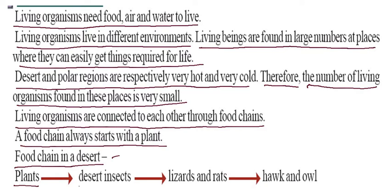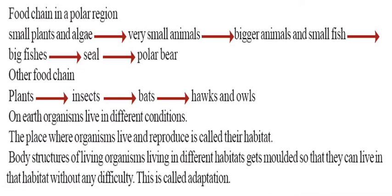Plants make their food through photosynthesis. So plants are eaten by desert insects, and desert insects are eaten by lizards and rats, and lizards and rats are eaten by hawks and owls. That is the food chain in a desert region. There is also a food chain in a polar region.